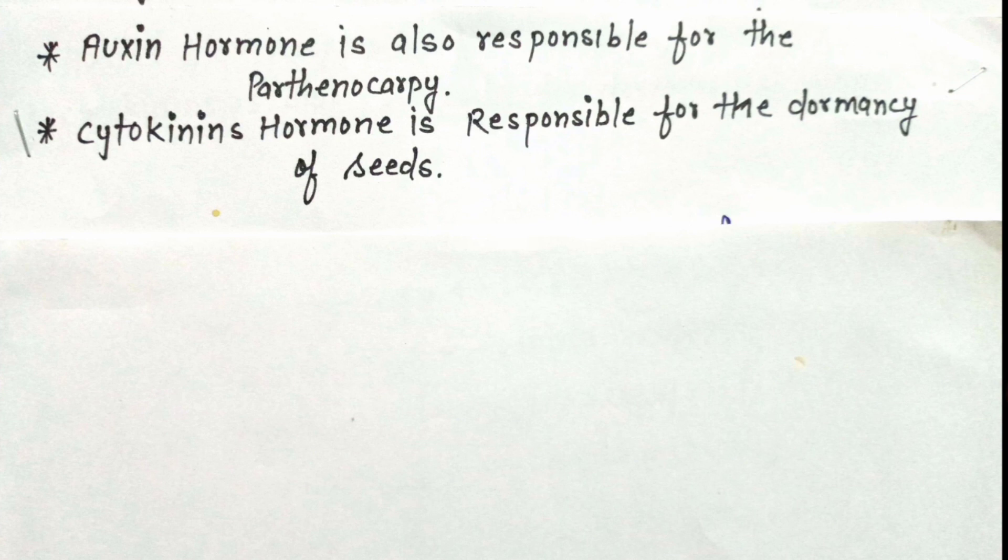Now we are talking about what is parthenocarpy. Parthenocarpy is a process in which plants grow up through vegetative propagation. It means vegetative propagation occurs due to auxin hormone. Auxin hormone enables plants to complete parthenocarpy.